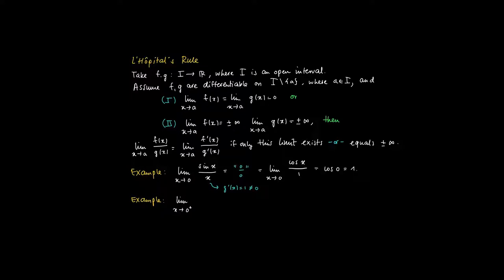Another example: we have 0 as a boundary for the function x·ln(x). This is well defined on (0, ∞). We have a product where x goes to 0 but ln(x) goes to minus infinity. We can write this as ln(x) divided by 1/x, and apply L'Hôpital's rule. The derivative of ln(x) is 1/x, and the derivative of 1/x equals minus 1/x². So we get the limit as x goes to 0⁺ of minus x, which of course equals 0.